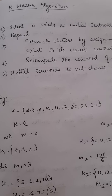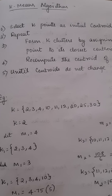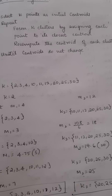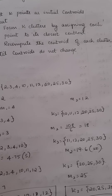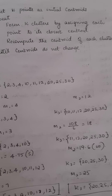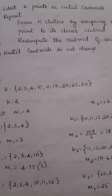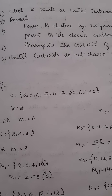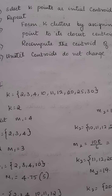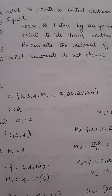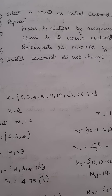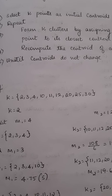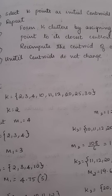The first and easiest algorithm to deal with is the K-means algorithm. I have written the steps here. What K-means does: we first initially choose K initial centroids, where K is the number of clusters. It can be any value — it is a user-defined parameter.